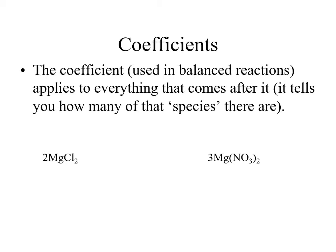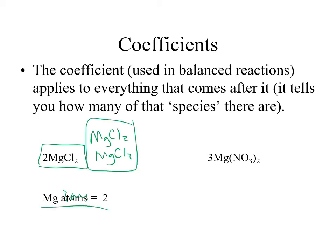When you also have a coefficient, it acts as a multiplier. If we have a 2 in front of MgCl2, we now have two magnesium ions — each MgCl2 has one — and each has two chloride ions, giving two groups of two, a total of four chloride ions. The coefficient of 2 tells us how many of that species we have, multiplying everything inside.